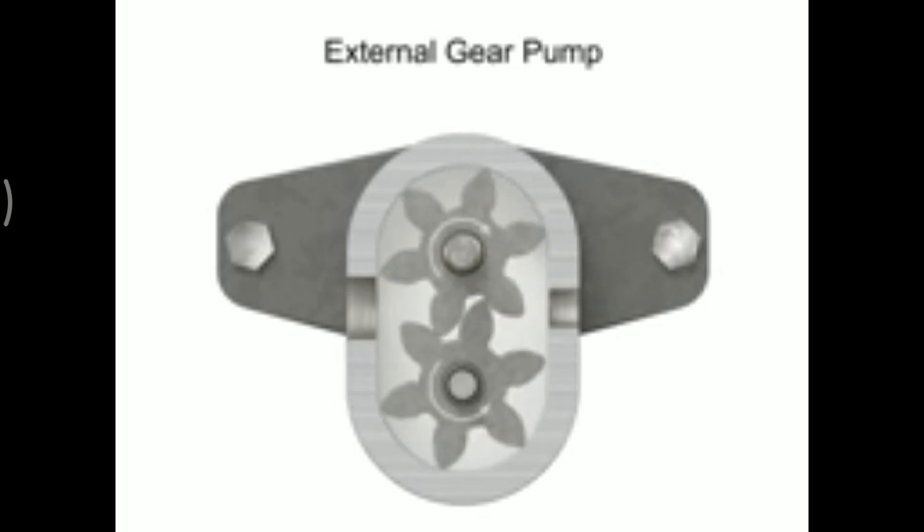As the gears rotate away from each other and come out of mesh, they create an expanding volume on the inlet side of the pump. This creates a vacuum at the inlet port allowing fluid to flow into the pump. Then fluid flows into the cavities and is trapped by the gear teeth.